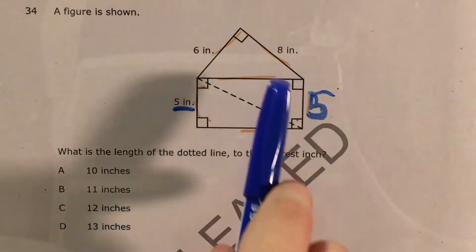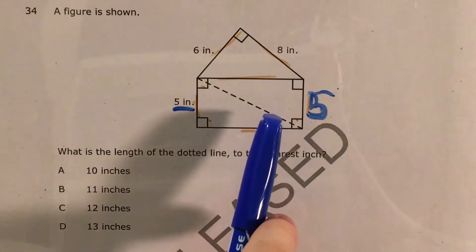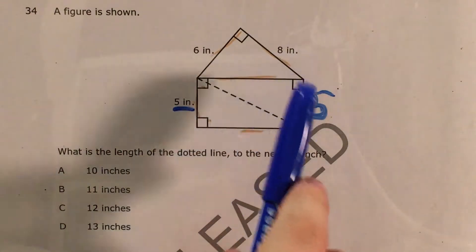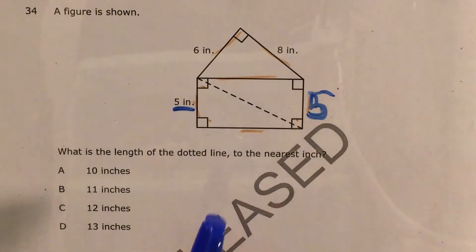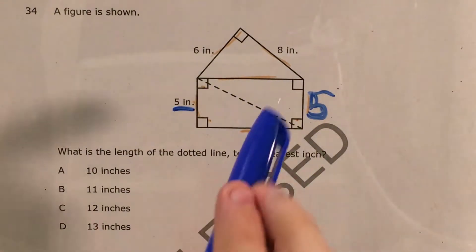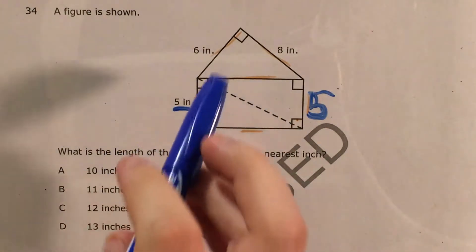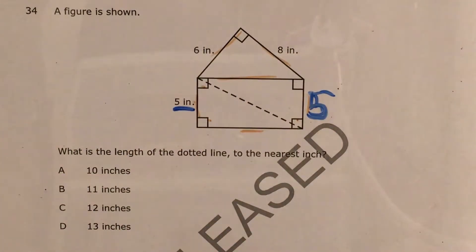So what that tells me is that if I know this side, I'll be able to use the Pythagorean theorem to use this leg and this leg to find this side and treat it like a hypotenuse. But first, I've got to treat this side like a hypotenuse with these two as my legs.